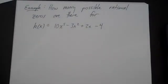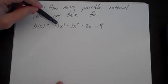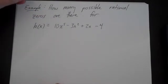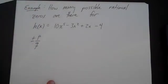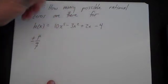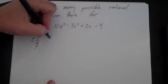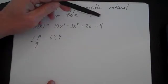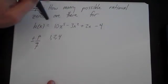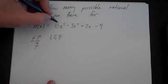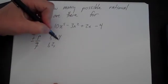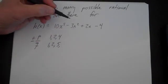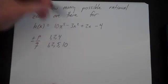Let's look at another example: how many possible rational zeros are there for k(x) = 10x⁵ - 3x² + 2x - 4? All rational zeros are in the form plus or minus P over Q. P is defined by the constant term 4, so P values are 1, 2, and 4. Q is all integer factors of the leading coefficient 10, which are 1, 2, 5, and 10.